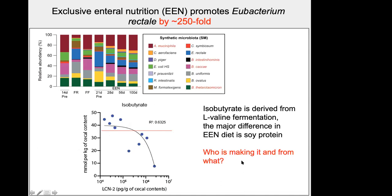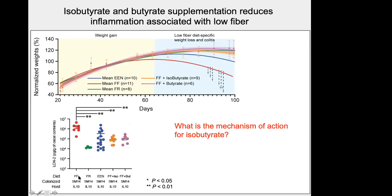A plot of inflammation by lipocalin against isobutyrate amount shows that once you get over a threshold of around 35 millimolar, mice are protected with low inflammation; below that we start seeing more disease. Gabriel did the obvious experiment: taking the sick low-fiber condition and putting isobutyrate or butyrate in the mice's water — both groups are protected to some degree compared to neither. We're actively looking at the mechanism of action and whether it differs from butyrate, and investigating who is making isobutyrate and from what.